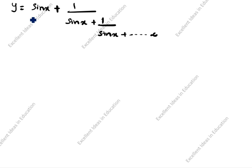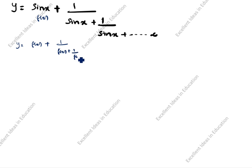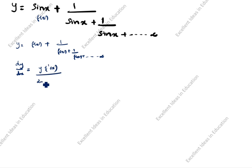y is equal to sin x + 1/(sin x + 1/(sin x + ...)) going on to infinity, which is y = f(x) + 1/f(x) + ... going on to infinity. The formula for dy/dx in this case is: y·f'(x) divided by (2y − f(x)).